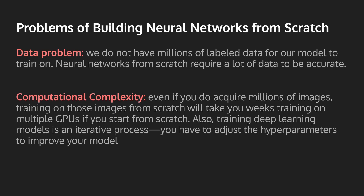The second issue is computational complexity. Even if you do acquire millions of images, training on those images from scratch will take you weeks — training on multiple GPUs from scratch. Also, training deep learning models is an iterative process; you have to adjust the hyperparameters as you go to improve your model's performance. Imagine having to do this repeatedly — it would take us months, even years. So it's not ideal to build a neural network from scratch, especially when aiming for high accuracy.